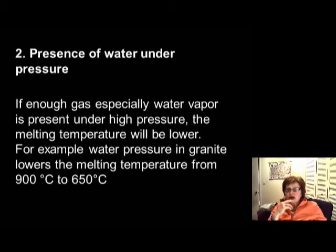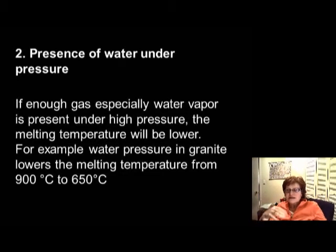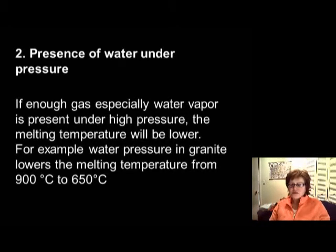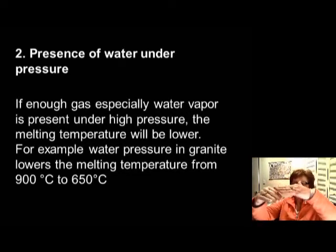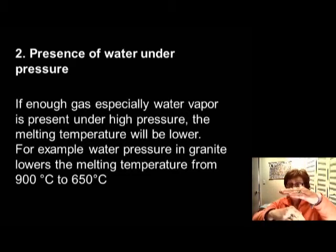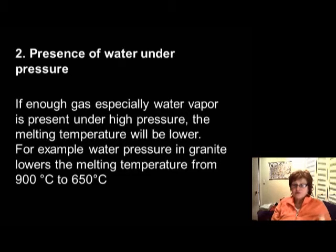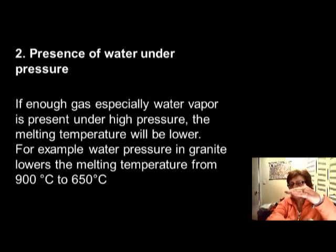The next factor influencing melting temperature is water under pressure in the magma. If there is water under pressure, it really decreases the melting temperature — from around 900 down to 650 degrees Celsius. For example, at the plate boundary in the western US, the Pacific plate goes underneath, and the magma forming there is about 600 degrees Celsius because water from the ocean is carried down with the plate, causing melting at a much lower temperature.